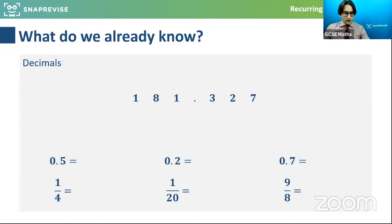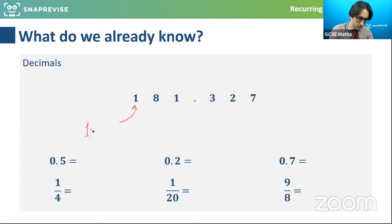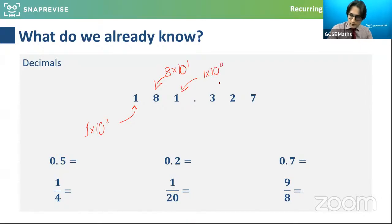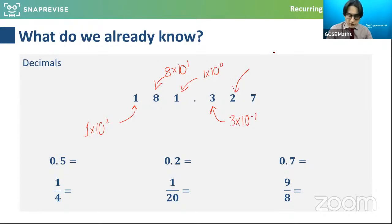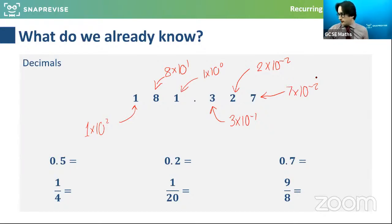I'm going to start with a recap of ideas that will tie in. Take the number 181.327 — this is about place value: one lot of 10 squared, eight lots of 10, one lot of 10 to the zero. The number system we use is base 10, dealing with powers of 10. Those who've seen standard form might recognise this, but we should all be familiar with place value.